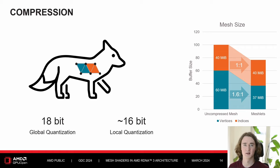We want to use meshlets with a local set of vertices per meshlet, meaning we have to duplicate every vertex at the border between two meshlets. Duplicating vertices makes the vertex buffer larger, but we can redeem buffer size by quantizing all vertex attributes. We chose an 18-bit global quantization grid, and by storing data locally per meshlet, we can reduce the bits needed to about 16 bits while still guaranteeing crack-free dequantization. This reduces the vertex buffer size down to just 37 megabytes.